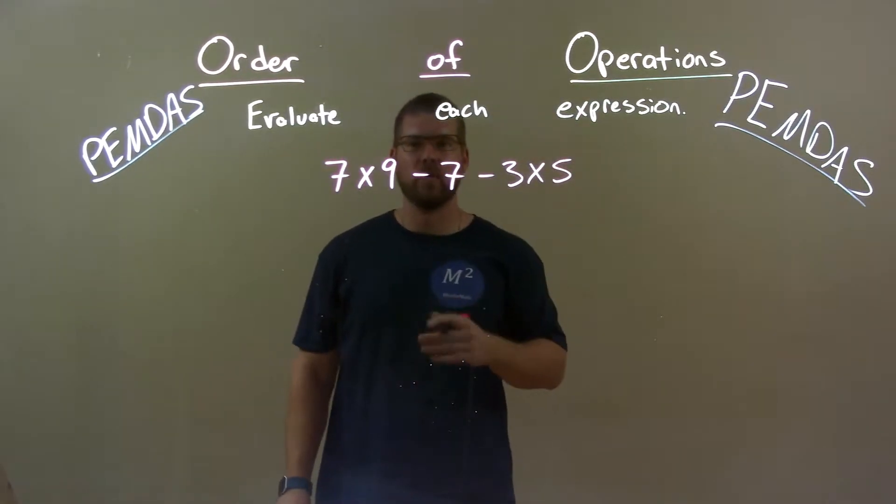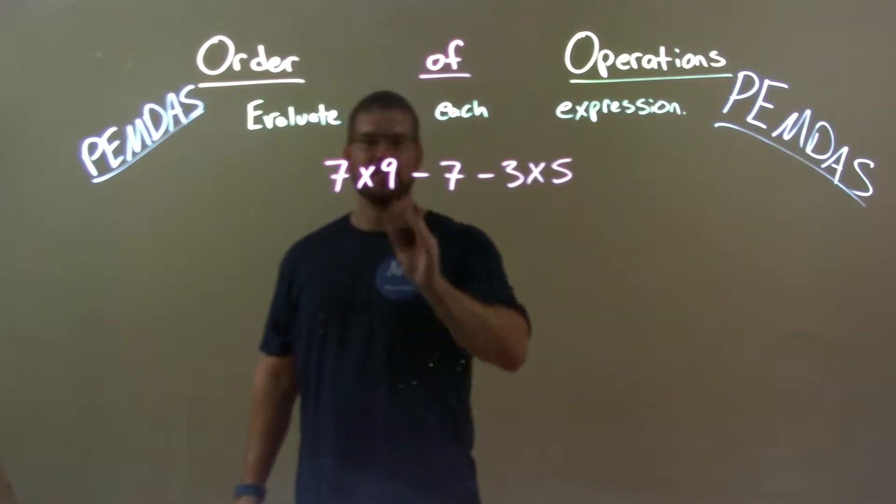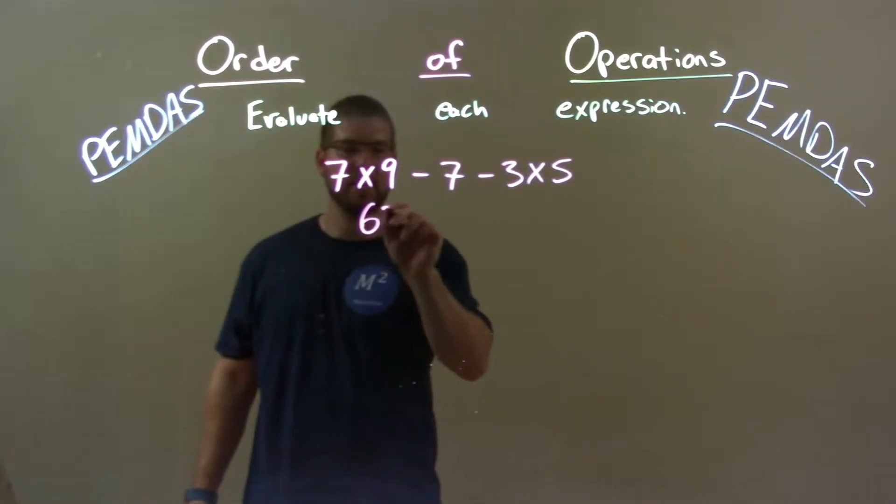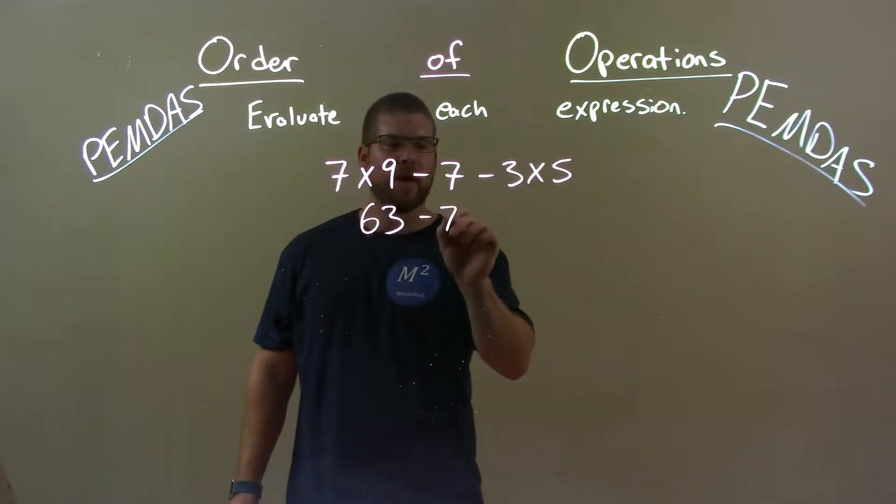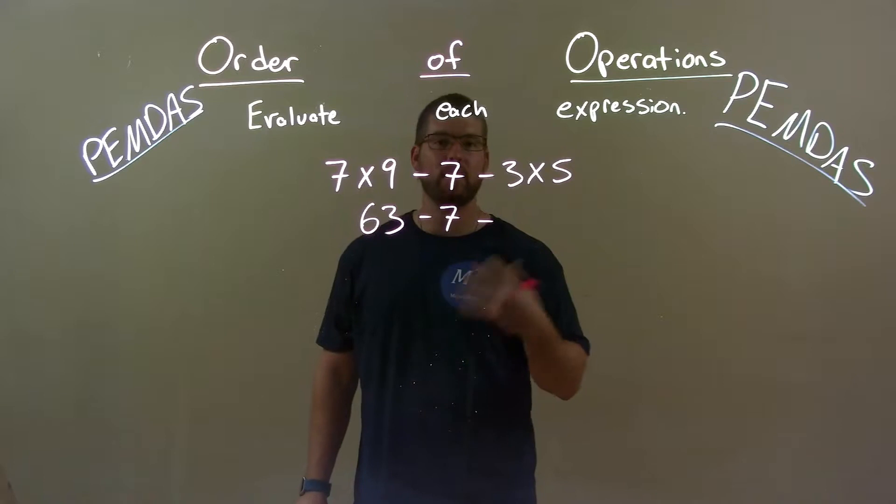Multiplication is our highest order and we see it twice. So let's go deal with that. 7 times 9 first, 63. Then we'll bring down the minus 7 and minus whatever 3 times 5 is. 3 times 5 being 15.